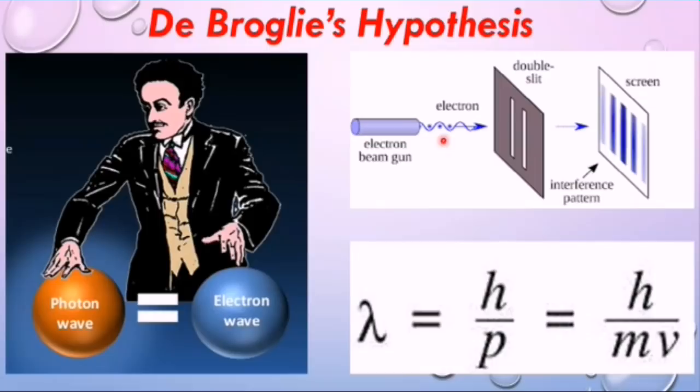De Broglie's question was, if photons exhibit wave and particle properties, would all matter do so as well? De Broglie postulated the wave nature of electrons. Einstein appreciated his brilliant idea.